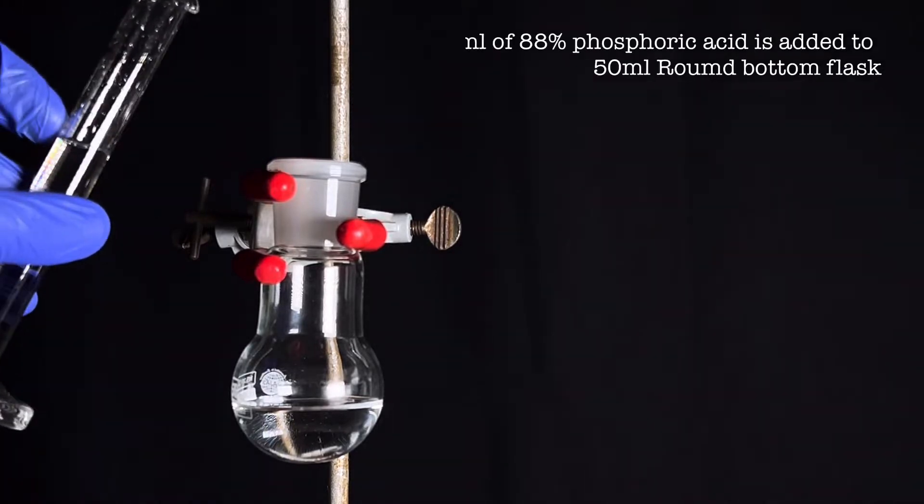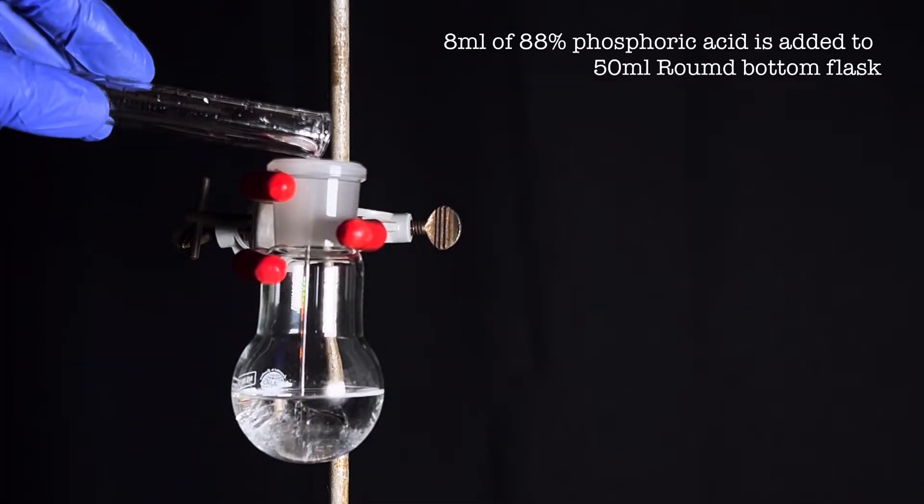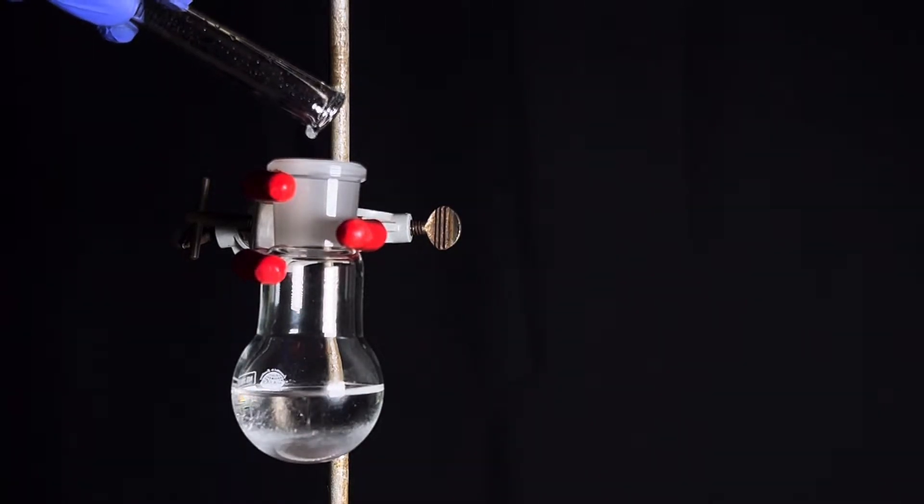Next, add 8 ml of 88% orthophosphoric acid to the round bottom flask. Phosphoric acid is the dehydrating agent in this case.